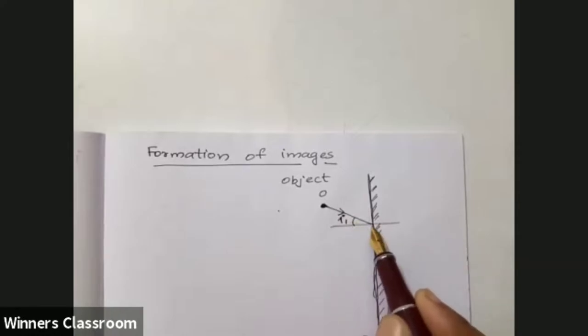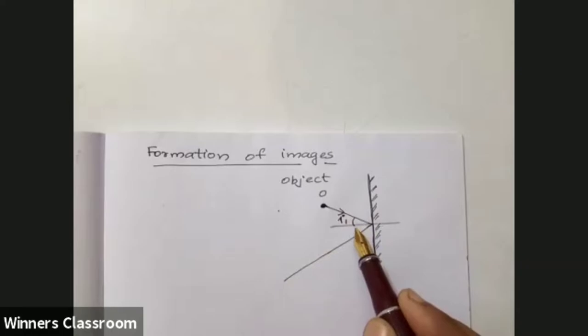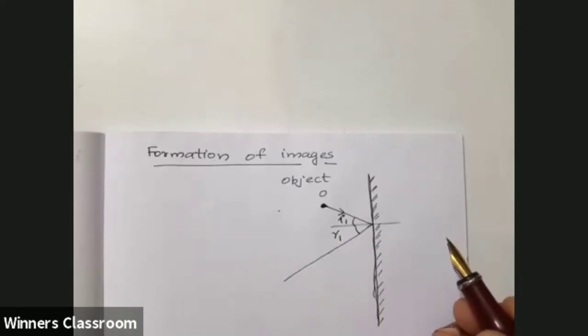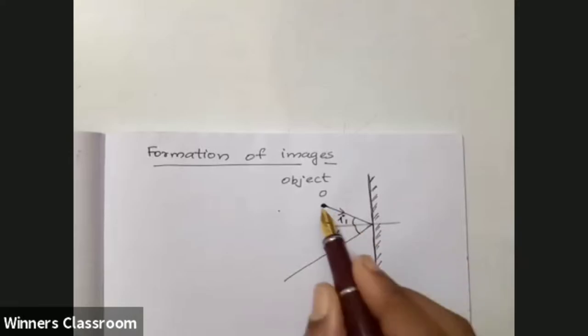This angle is the equal angle for the reflected ray. This is the angle of reflection - angle of reflection. I am going to mark it as R1 from the object.